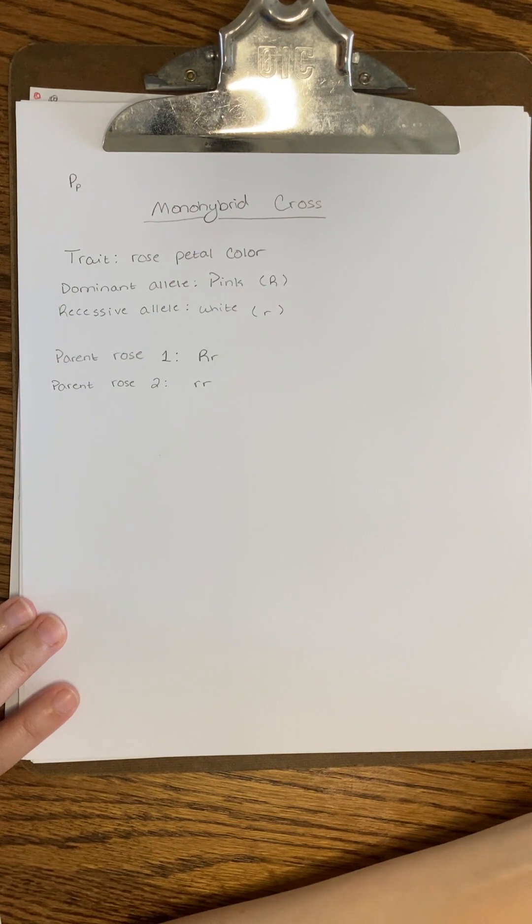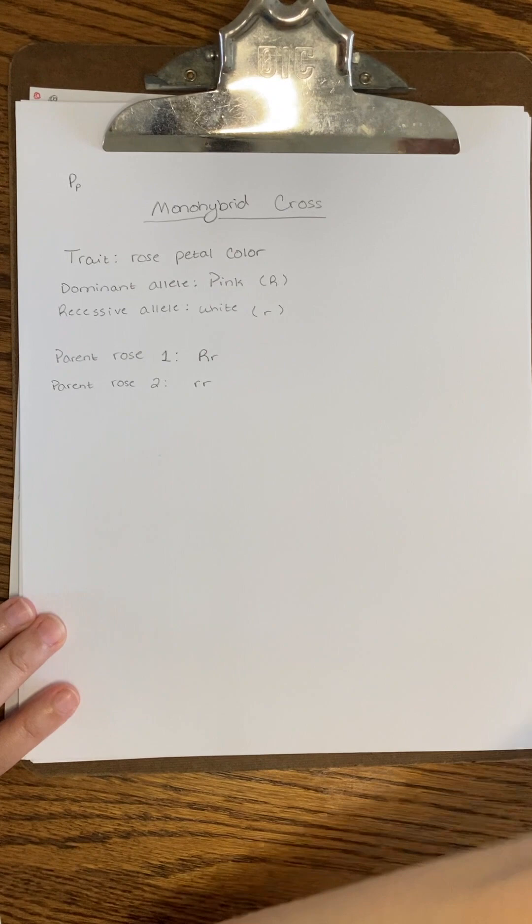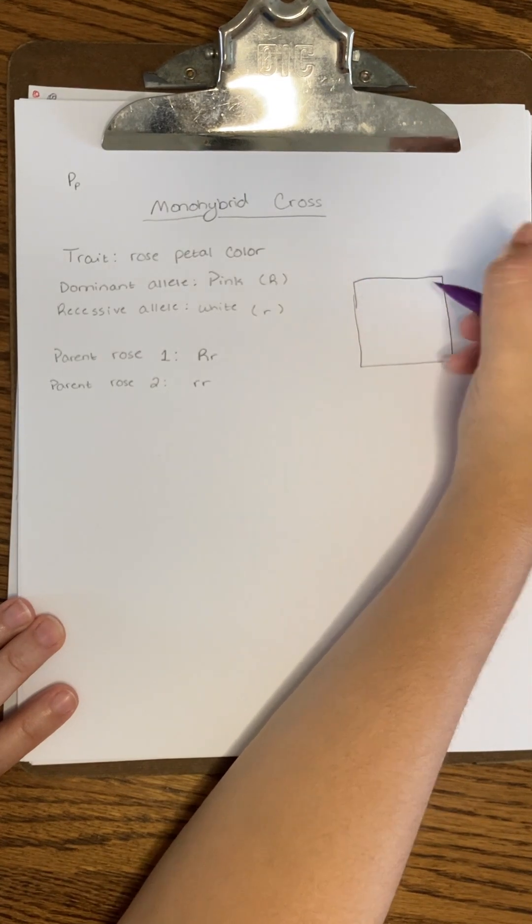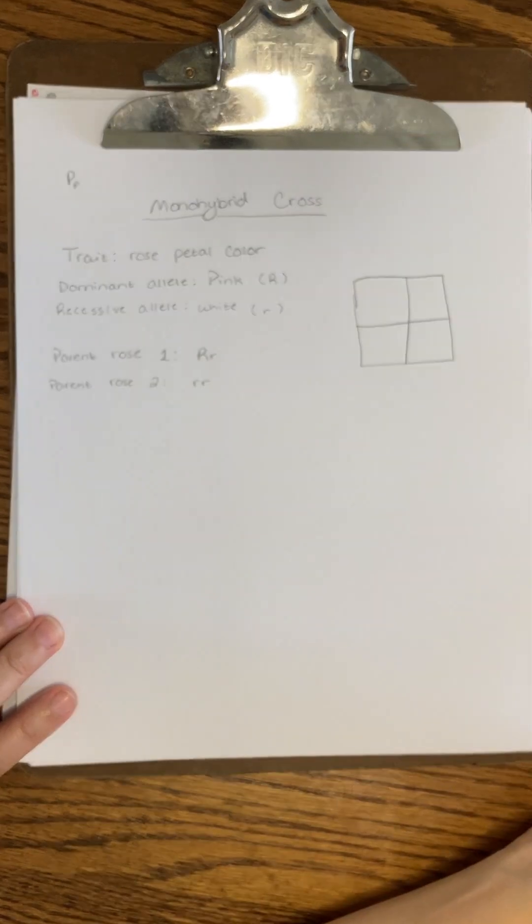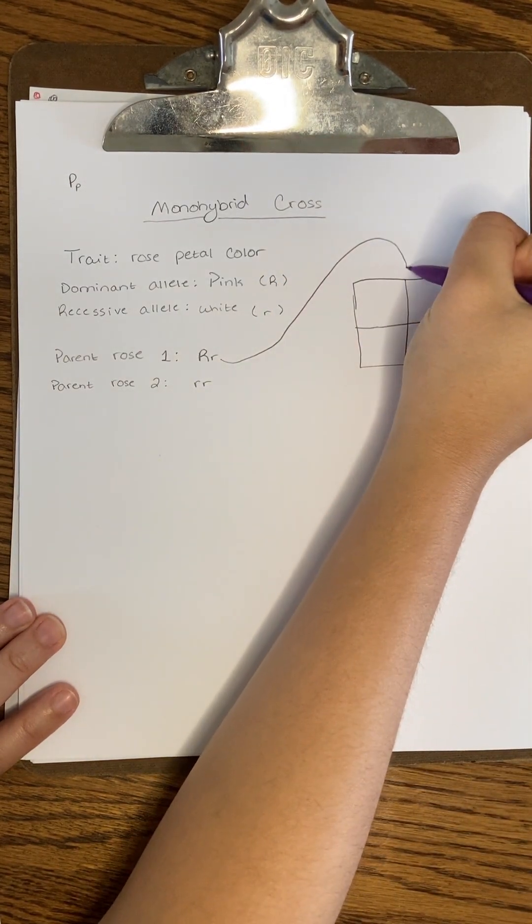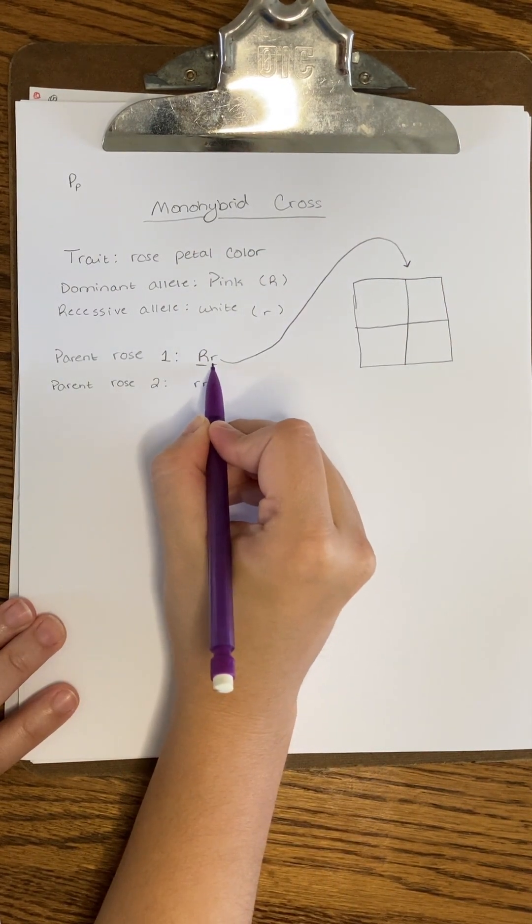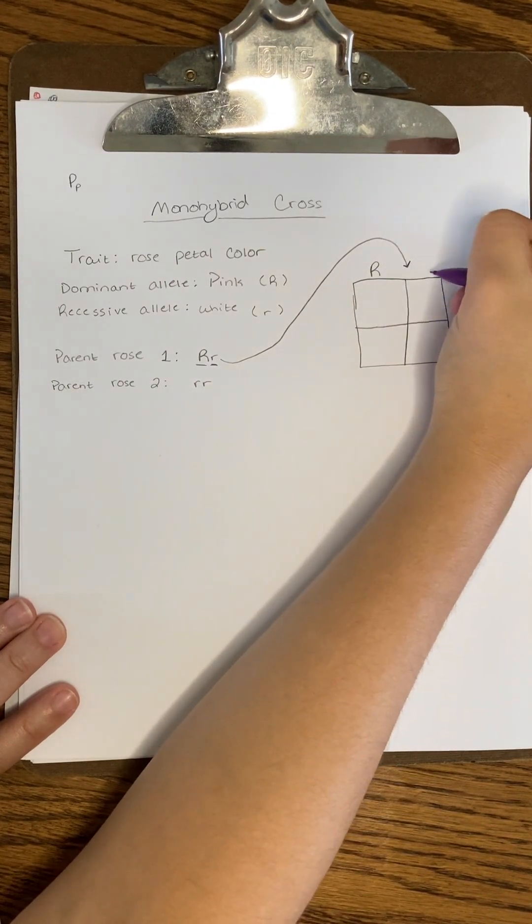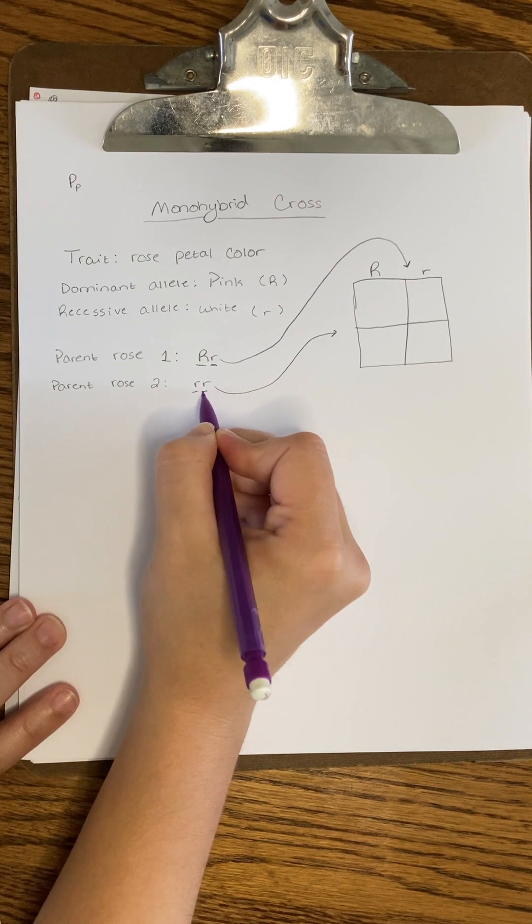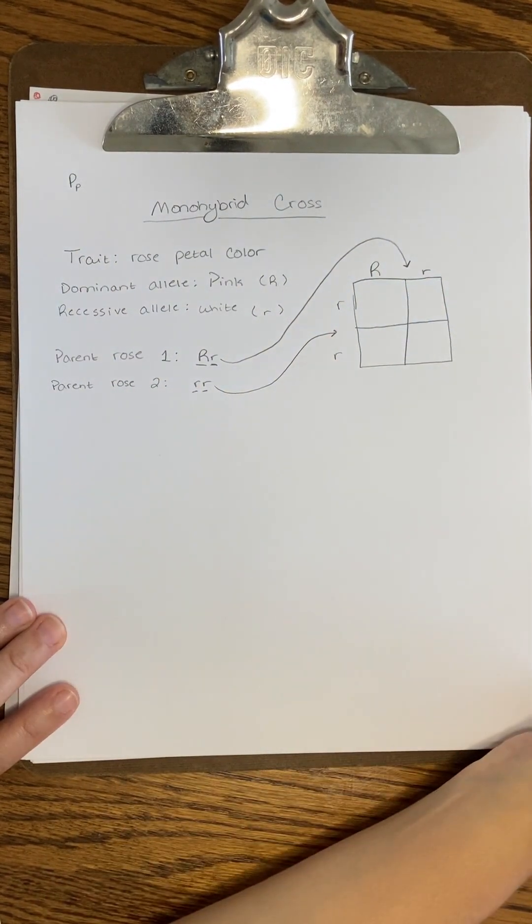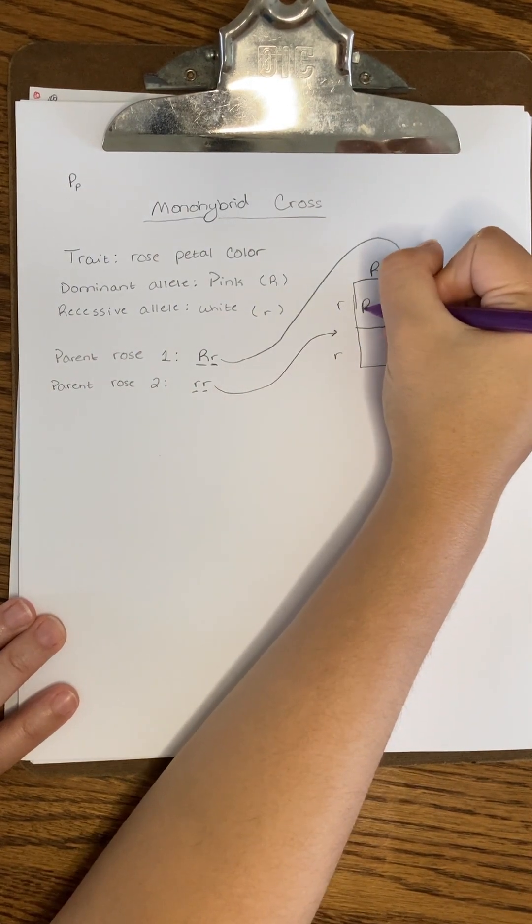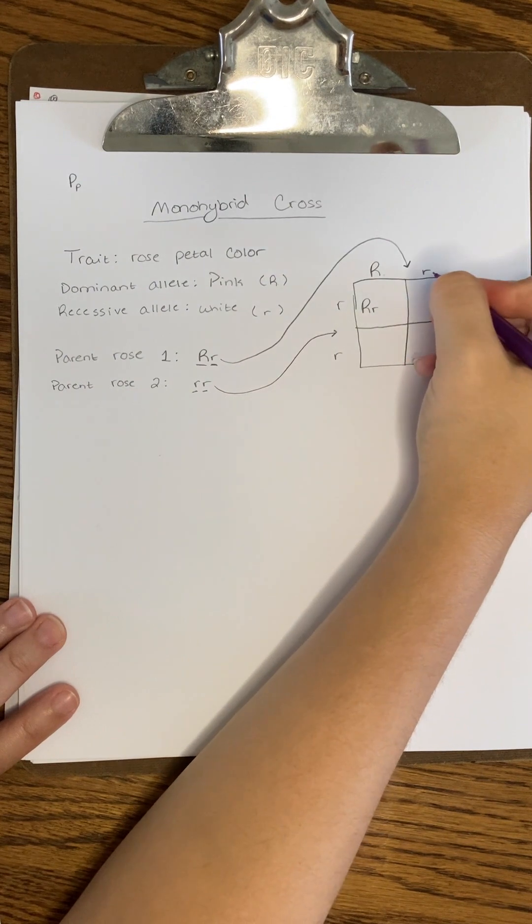Suppose I want to know what the chances are of getting pink rose offspring. Here's how we would determine that. First, draw a box with four squares in the middle. Then split up the alleles of one parent and place them each over one box across the top. Split up the alleles for the second parent and place their alleles next to their own box along the left side. It doesn't matter which parent's alleles go where, as long as you keep the alleles that go to the same parent together. Now you're going to fill in the inner boxes with the combination of their alleles. Be sure you always place the capital letter first if there is one.